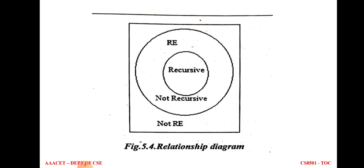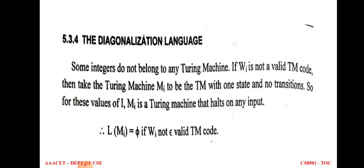This is the relationship diagram between recursive enumerable and recursive language. All recursive languages are recursively enumerable, but not all recursively enumerable languages are recursive. The complement of recursive and recursively enumerable is defined accordingly. Recursively enumerable is otherwise called not recursive in the broader sense. All recursive languages are known as recursively enumerable languages, but not all recursively enumerable languages are recursive — only some recursively enumerable languages are also recursive.